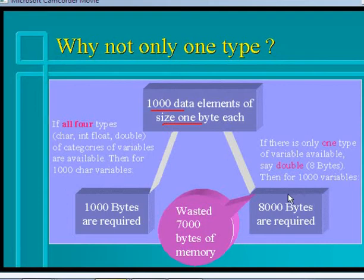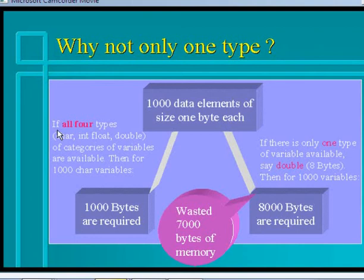But in this case there is a wastage of 7000 bytes of memory, because if all 4 categories of variables are available, then for 1000 character variables only 1000 bytes are required. So 8000 minus 1000 equals 7000 — a wastage of 7000 bytes. It's a very costly solution, and hence C offers 4 different types of variables.